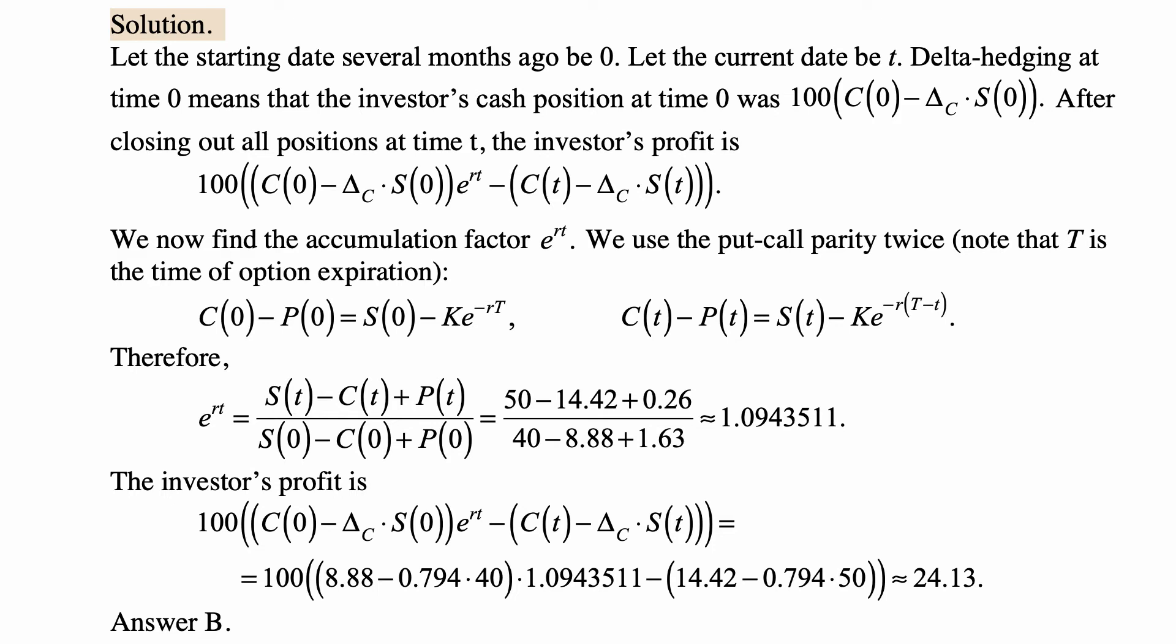After closing out all positions at time t, the investor's profit is 100 times [C(0) - delta_C * S(0)] * e^(rt) - [C(t) - delta_C * S(t)].